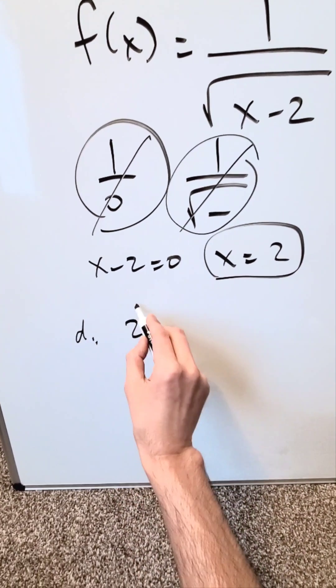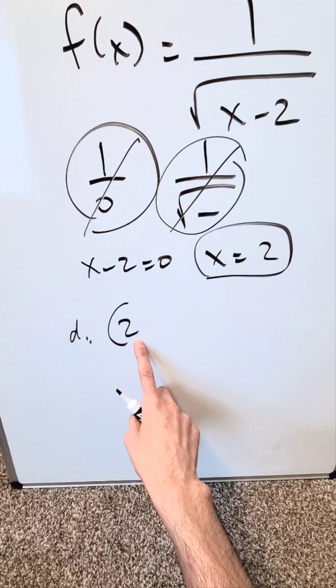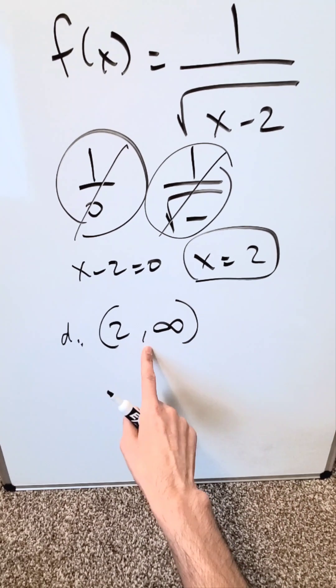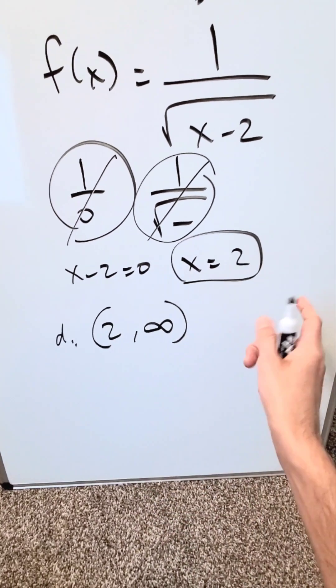We are looking here at a domain which would be 2, but not including 2, going all the way up to infinity. This right here would be the domain and it would be correct.